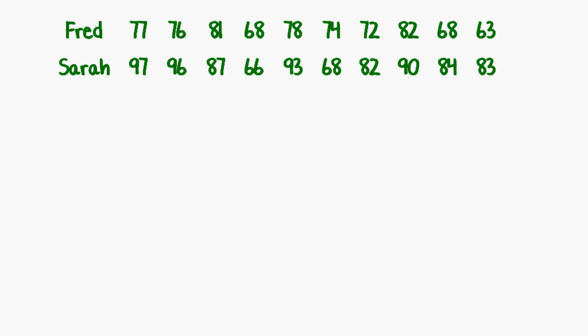Sometimes you will see a back-to-back stem plot, which is just like any other stem plot, except we have two pieces of data going out either side. And this is what I mean. Here we have two students, math students, and the results that they got on a series of weekly tests, for example. So Fred scored 77 this week and the same week Sarah scored 97. In the second week he scored 76 and she scored 96, et cetera, et cetera.